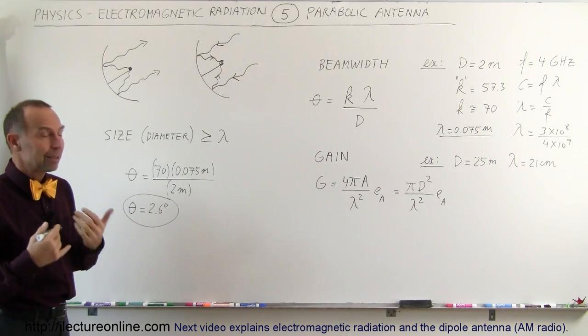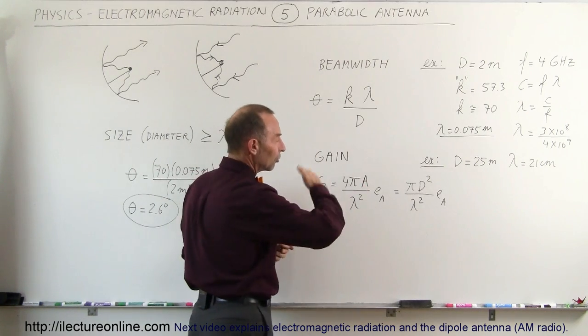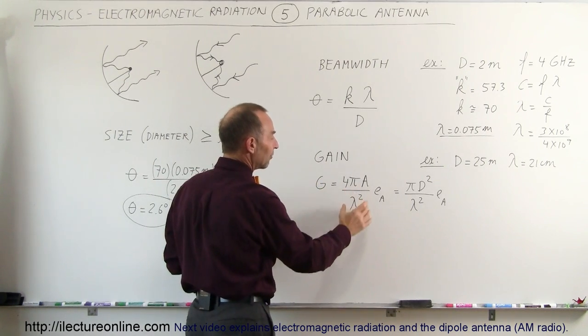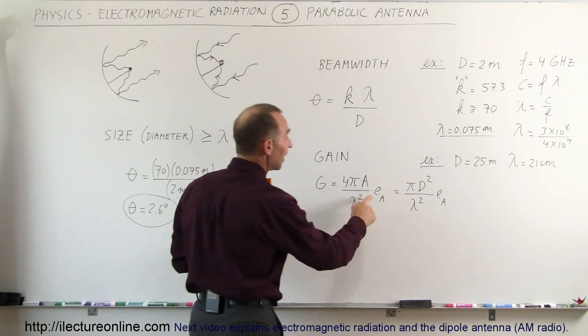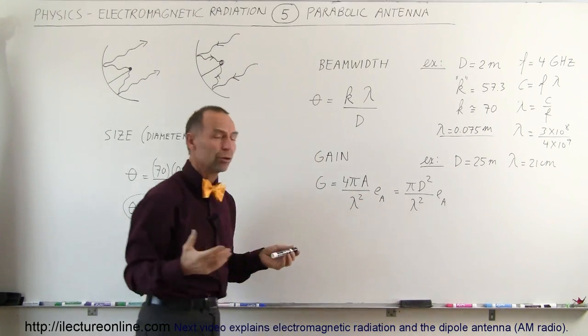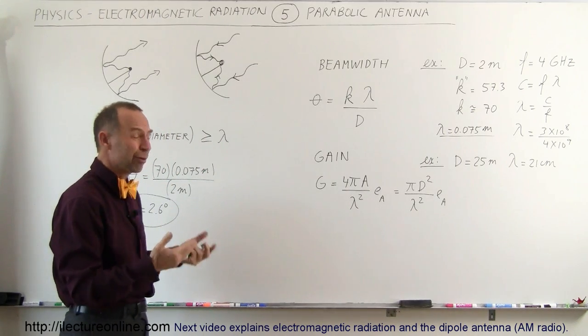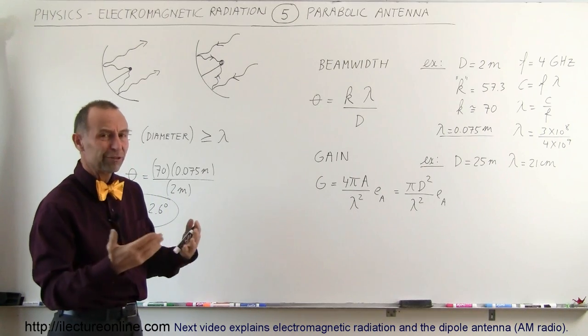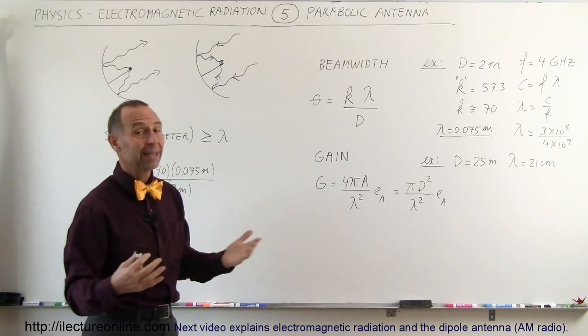The gain of the antenna can be calculated by taking the area of the antenna, the surface area, times 4π divided by lambda squared - the wavelength of the radiation that you're receiving - times the efficiency of the aperture. The efficiency is usually somewhat less than 1, maybe 0.5, 0.6, 0.7. Let's just call it 1 for now to make things easy and figure out what the gain would be for a typical antenna.